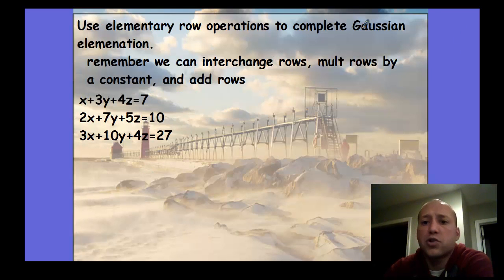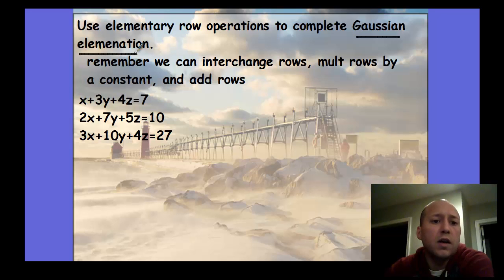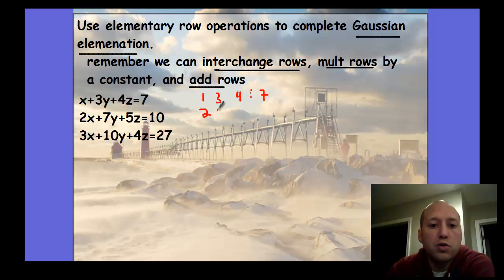The Gaussian elimination, same thing we did in the previous section, except instead of leaving it in a system format, we're just going to put it in a matrix format. Remember, you can interchange the rows. You can multiply rows by constants, add or subtract the rows. So we're going to have 1, 3, 4, 7; 2, 7, 5, 10; and 3, 10, 4, 27.